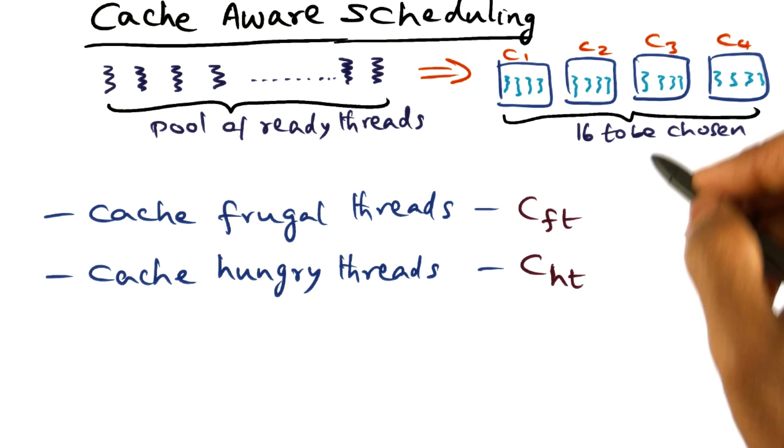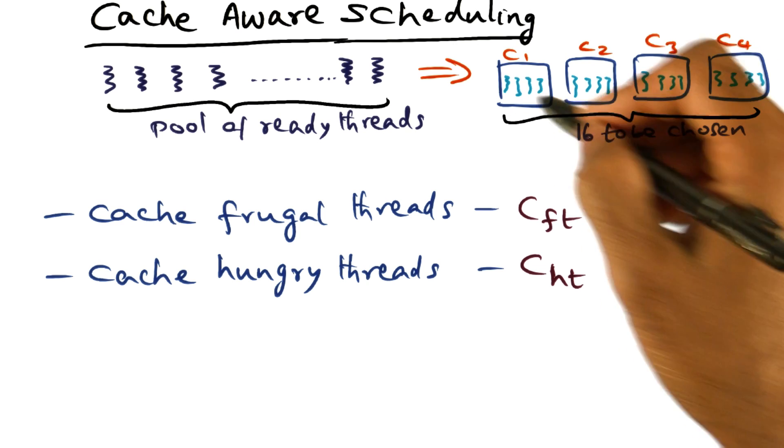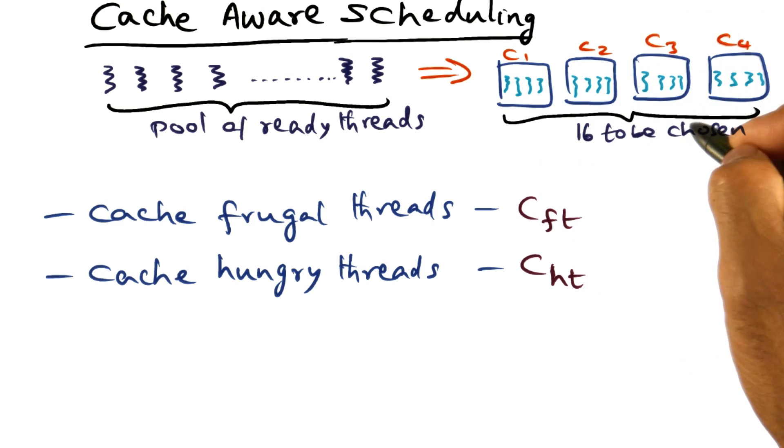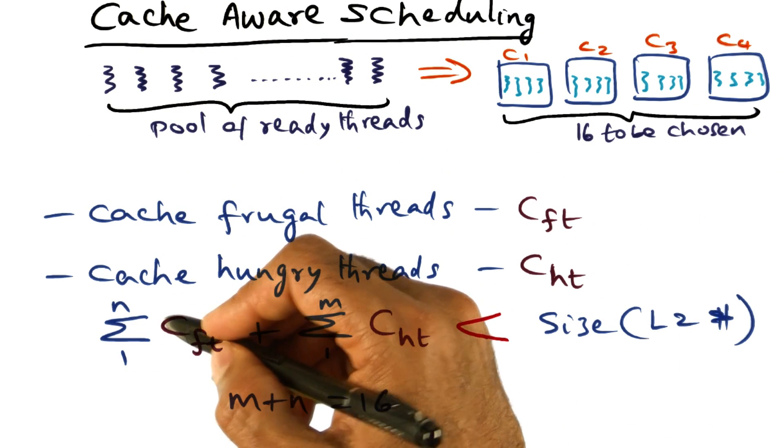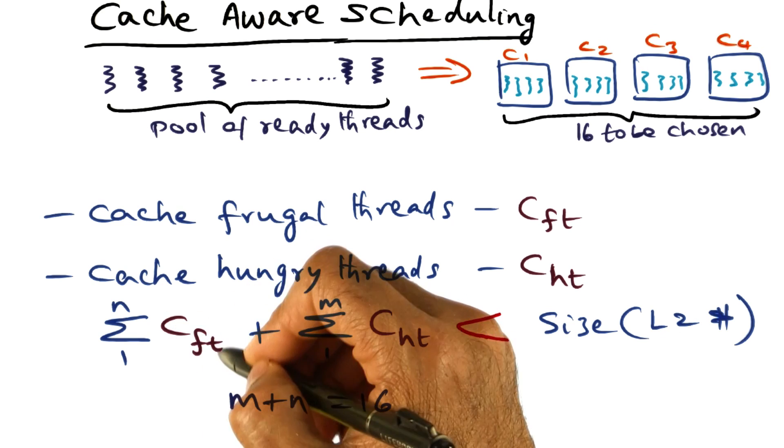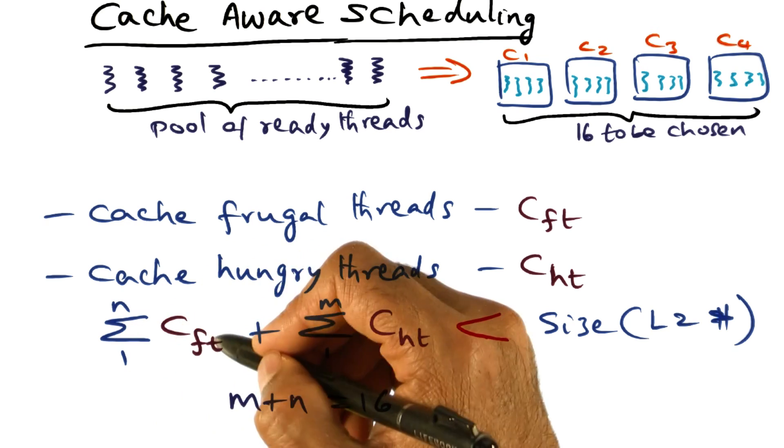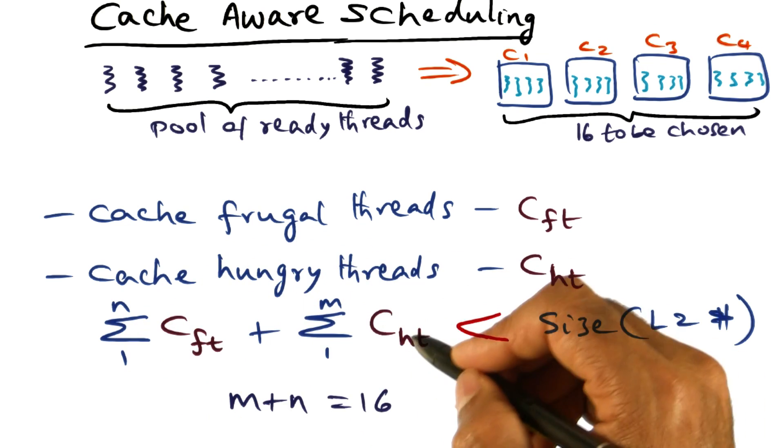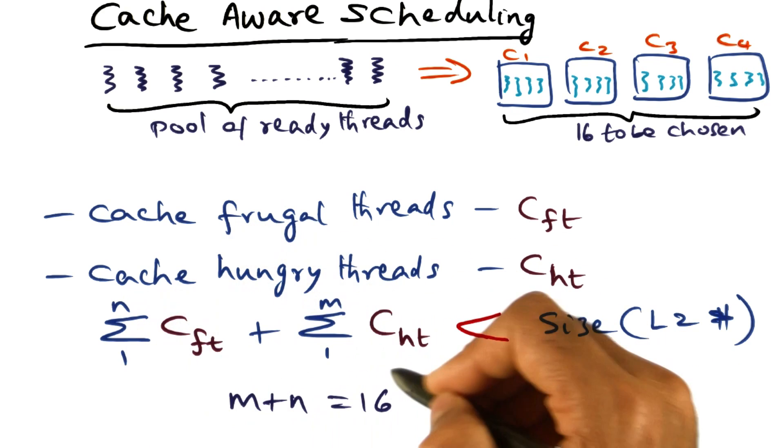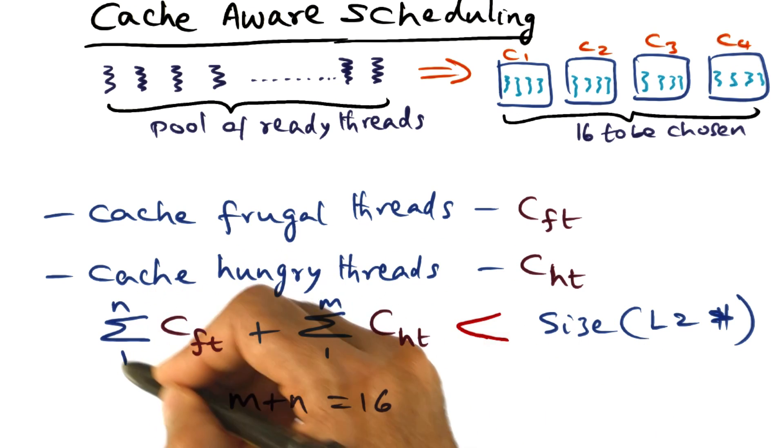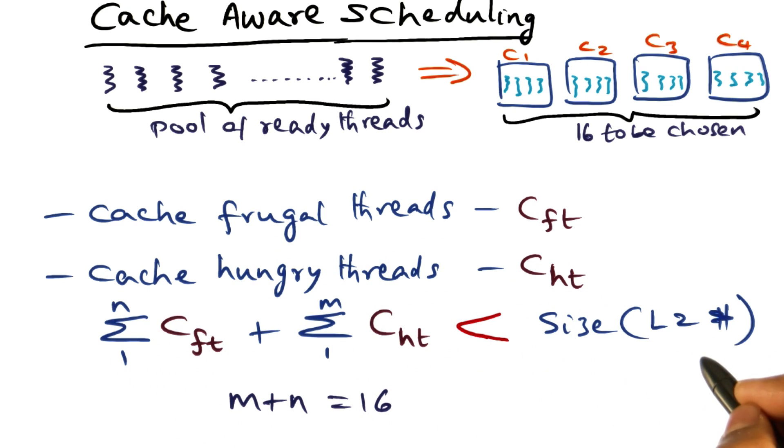The criterion that you want to use in picking the set of threads to be populated in the CPU at any point of time from the pool of available threads is to make sure that the sum of the cache requirement of all the cache-frugal threads—if there are N cache-frugal threads and there are M cache-hungry threads—then the cumulative cache requirement of all the threads put together is less than the total size of the L2 cache. As I told you, we can generalize this L2 cache to the last-level cache.